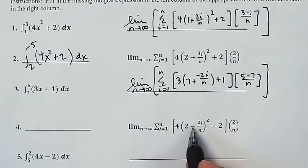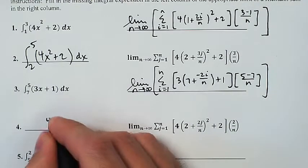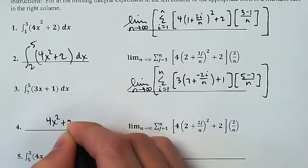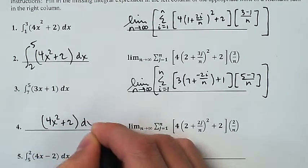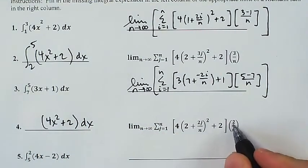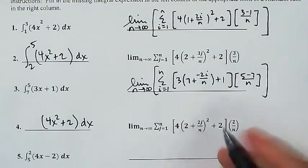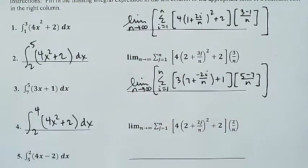Number 4 is going to be 4x² + 2 is my integrand. Now it's going to have a width of 2 and it's going to start at 2, so that's going to be the integral from 2 up to 4.